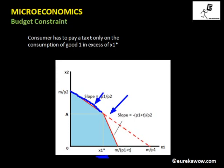After x1 star, since the consumer has to pay tax t on good one, the effective price of good one increases — the consumer pays p1 to producers and tax t per unit to the government. So the net price becomes p1 plus t, and the horizontal intercept becomes m divided by p1 plus t, which is less than m divided by p1.